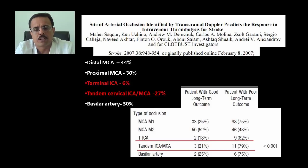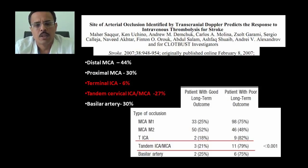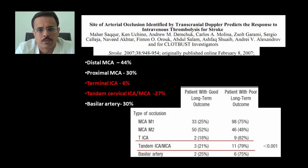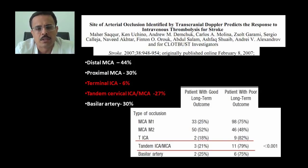These are critical questions. The CLOTBUST trial found that prognosis of patients with ICA occlusion or tandem occlusion is very poor after IV tPA. Various trials such as Extend IA, Swift Prime, MR CLEAN, and others have proven that mechanical recanalization is effective in a selected group of patients.